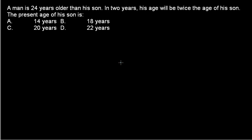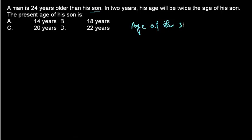The first thing is to assume the age of somebody. We always try to assume the age of the youngest person in the family. In this case, the youngest person is the son, so let's assume the age of the son.